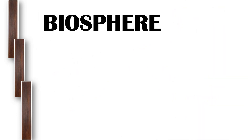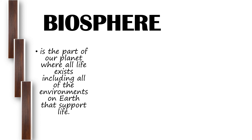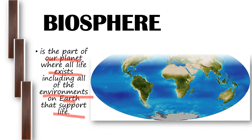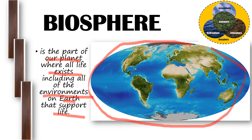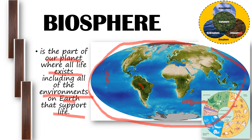The last level is the biosphere. The biosphere is the part of our planet where all life exists, including all of the environments on Earth that support life. The biosphere is composed of the atmosphere, the ecosphere, the hydrosphere (water), and the lithosphere (the entire earth). In the biosphere, all different forms of organisms live — insects, microorganisms, fungi, plants, and especially human beings.